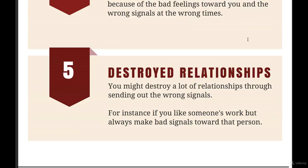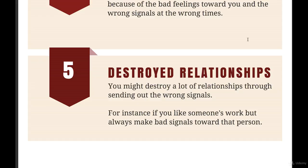Number five is destroyed relationships. You might destroy a lot of relationships through sending out the wrong signals. For instance, if you have an employee whose work you like a lot, but you always send that person a bad impression or bad signal, that person is going to be unhappy and the relationship could be destroyed even though there's no real reason. Or the other way around: if you don't like someone's work at all but you always give the impression that you like it, that person will continue as they are. Then at a certain point you lay them off, and they don't understand why — because you always gave them a great signal and showed them you appreciated their work. So you end up destroying the relationship.